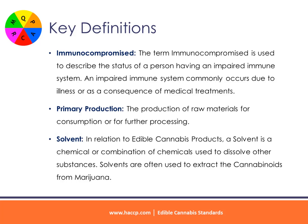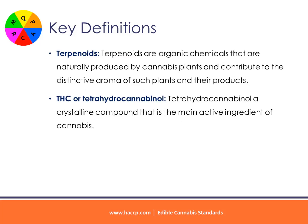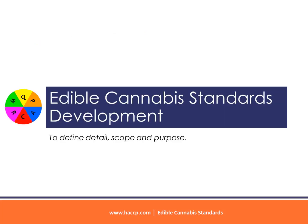Immunocompromised: used to describe the status of a person having an impaired immune system, which commonly occurs due to illness or as a consequence of medical treatments. Primary production: the production of raw materials for consumption or for further processing. Solvent: a chemical or combination of chemicals used to dissolve other substances; solvents are often used to extract cannabinoids from marijuana. Terpenoids: organic chemicals naturally produced by cannabis plants that contribute to the distinctive aroma of such plants and their products. THC or tetrahydrocannabinol: a crystalline compound that is the main active ingredient of cannabis.